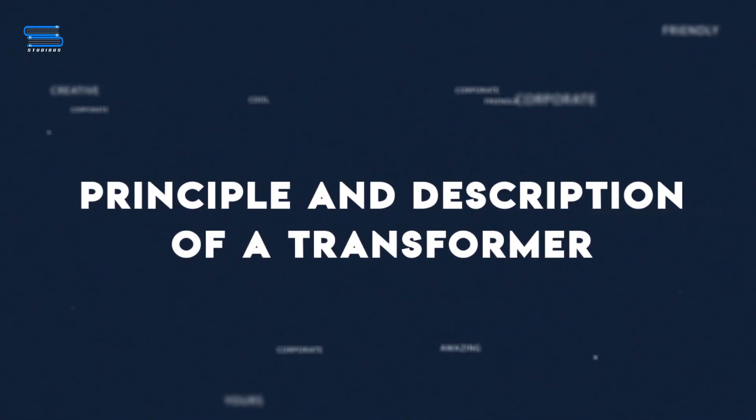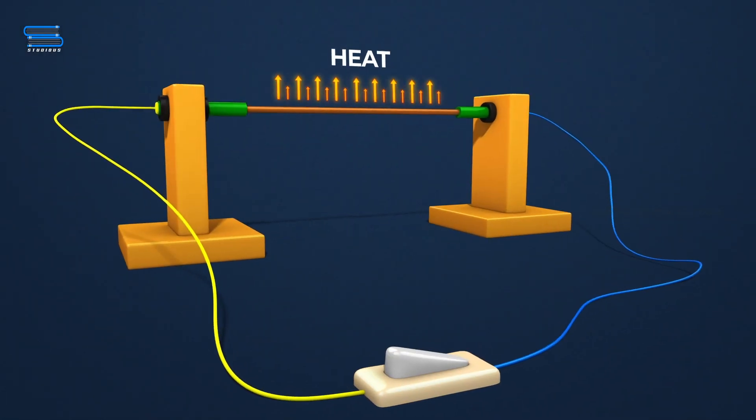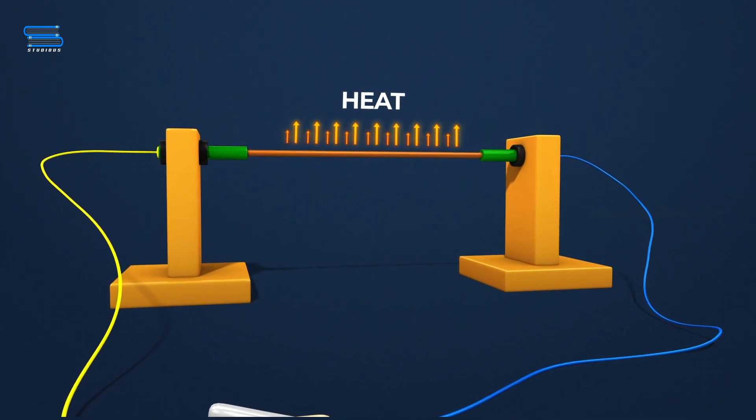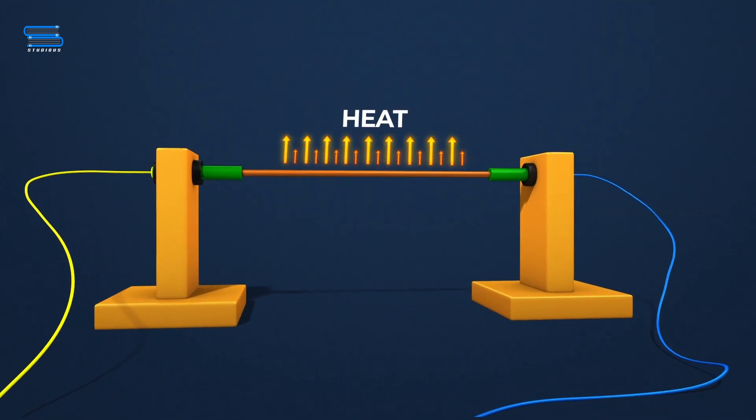Principle and Description of a Transformer. Large currents in an electrical circuit produce large amounts of joule heat, which is easily dissipated and lost forever.